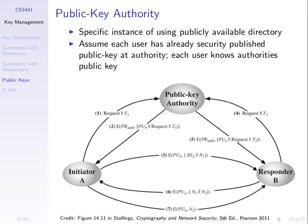Whenever A wants to talk to B, we go through these seven steps. The aim is that A knows B's public key and B knows A's public key. If we know the public keys and are sure they are the correct ones, we can use them to exchange secrets or whatever else we want to do later. The aim is to exchange public keys.